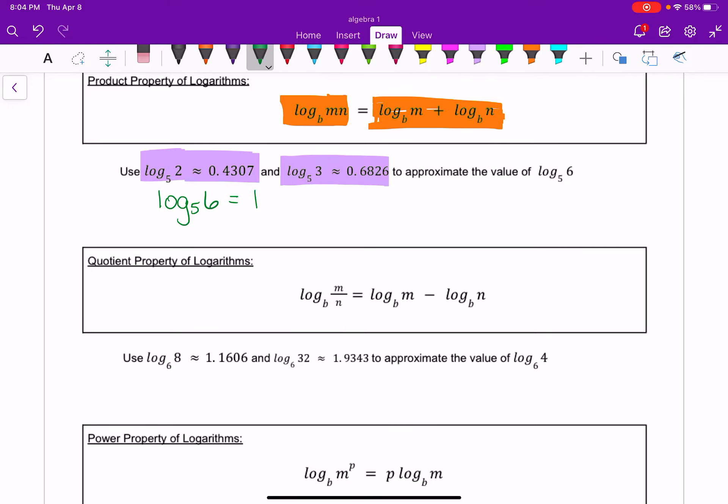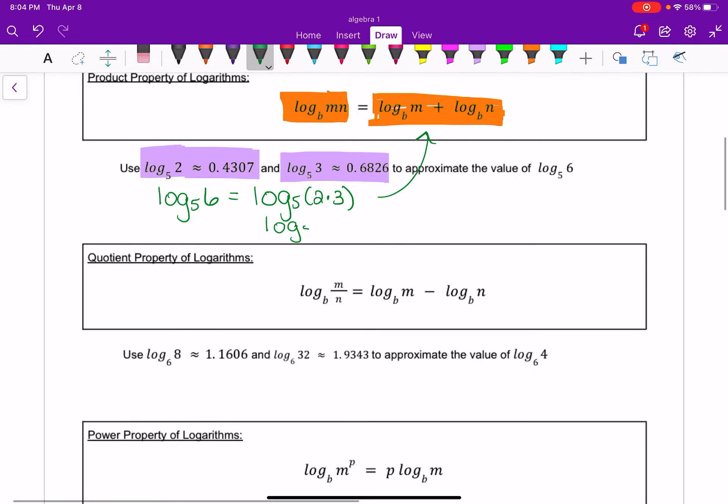I'm first going to say, well, I could really write it as log base 5 of 2 times 3. Now, because of this rule, I can rewrite it as log base 5 of 2 plus log base 5 of 3. And the reason I wanted 2 and 3 is because that's what I knew up here. That's what I gave you.